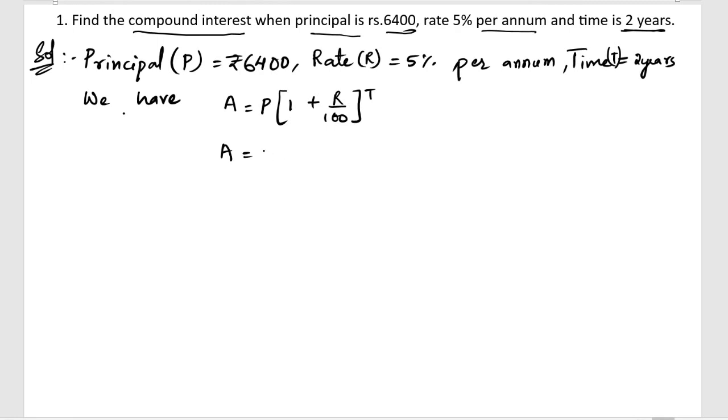T is nothing but the time, so time is for 2 years, so A equals 6400. Now, let us cancel this 5,